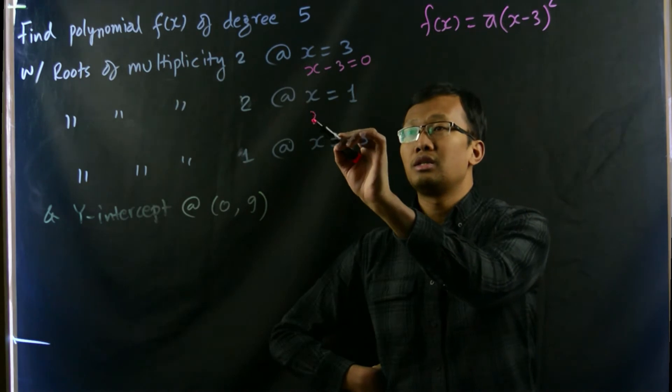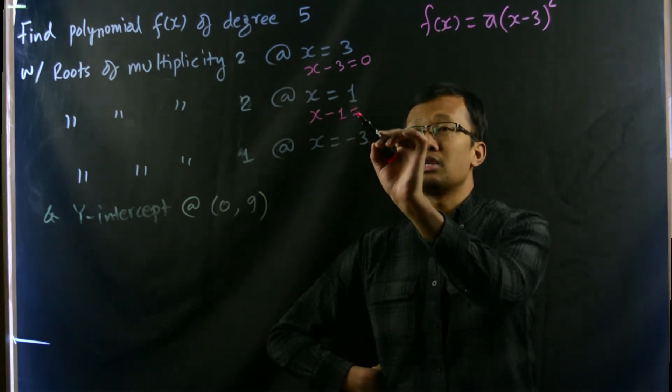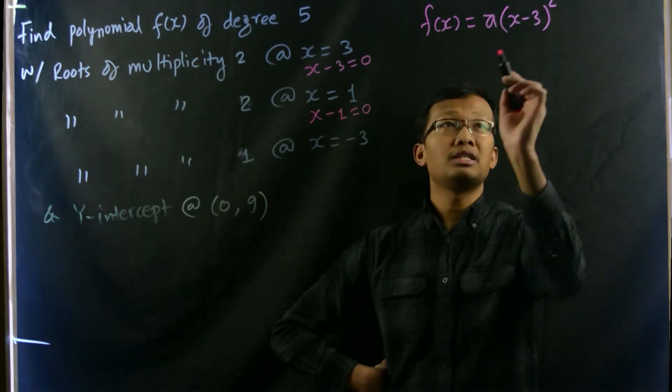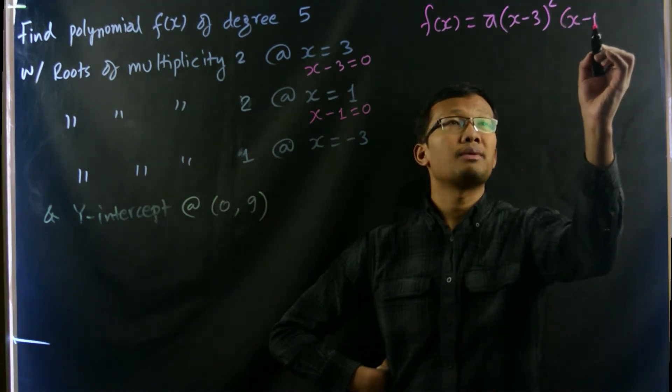Similarly for x equals 1, you write x minus 1 equals 0, and its multiplicity is also 2. So we go for (x minus 1) whole square.